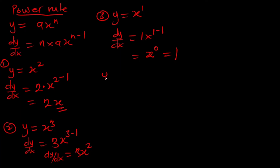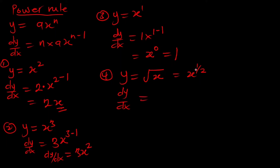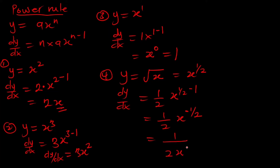The fourth example: what if we have y equal to the square root of x? Remember, root of x is the same as x raised to the power one-half. So our derivative dy/dx is going to be: the power one-half multiplies x, then we reduce the power by one, giving us one-half times x raised to the power negative one-half. This can be written as 1 over 2√x, and this is the derivative of √x.